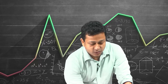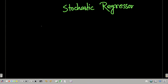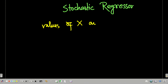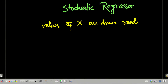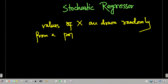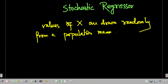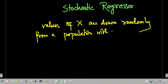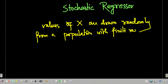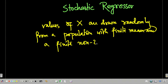What is a stochastic regressor? A stochastic regressor is one where the values of x are drawn randomly from a population with finite mean and a finite non-zero variance.